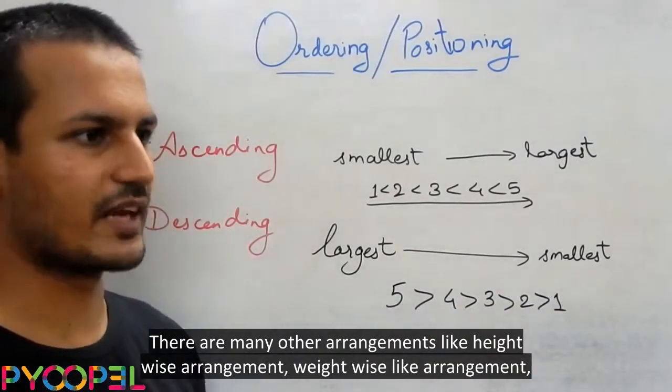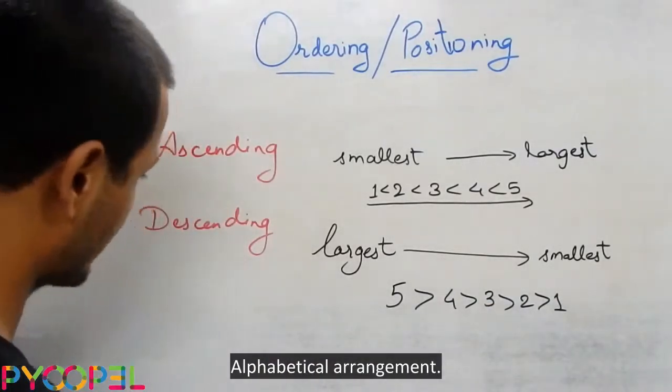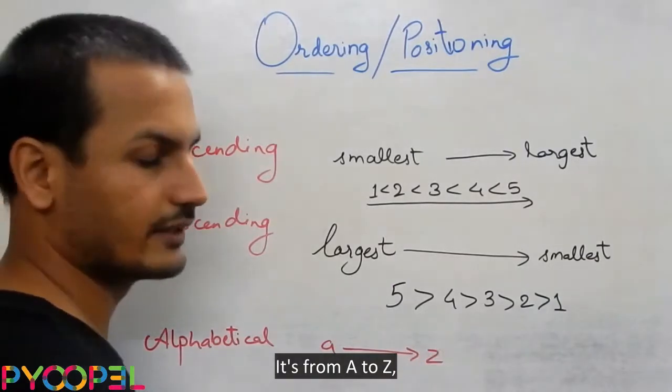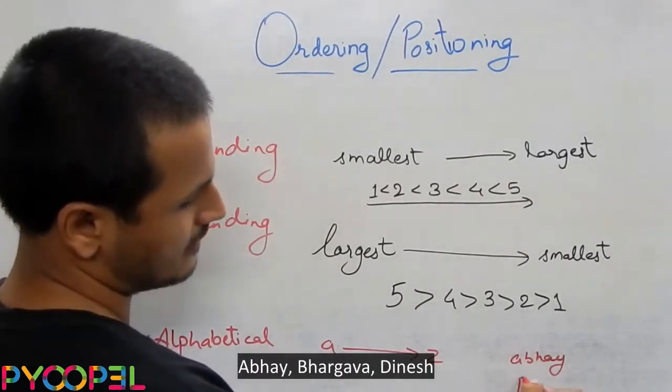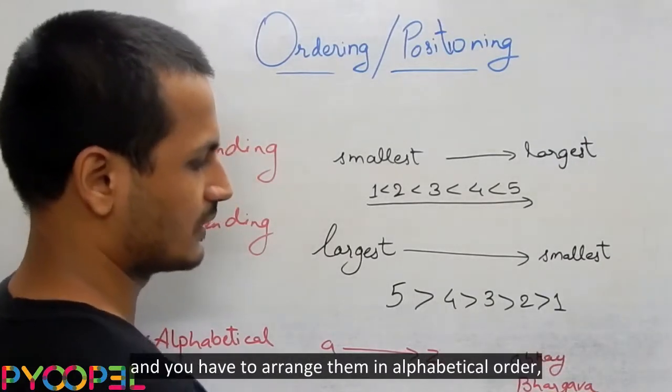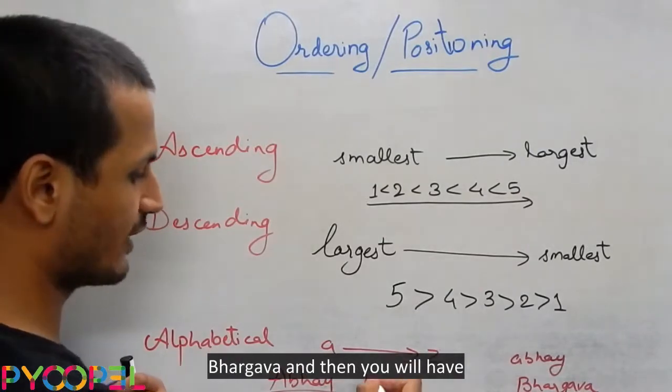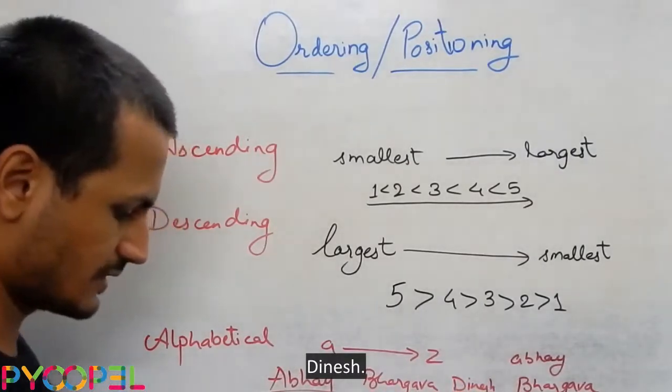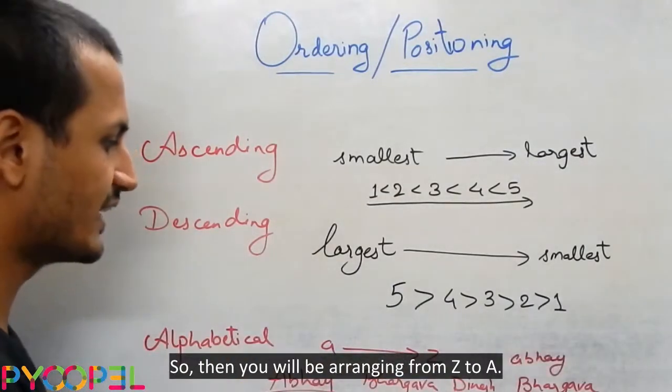There are many other arrangements like height-wise arrangement, weight-wise arrangement. One important one is alphabetic arrangement. Alphabetic arrangement is from A to Z, which means if you have, let's say, Abhai, Bhargava, Dinesh, and you have to arrange them in alphabetical order, then first Abhai, then next you'll have Bhargava, and then you'll have Dinesh. And reverse alphabetical order is just the reverse of the alphabetical order. So then you'll be arranging from Z to A.